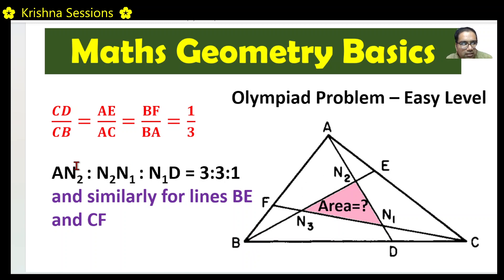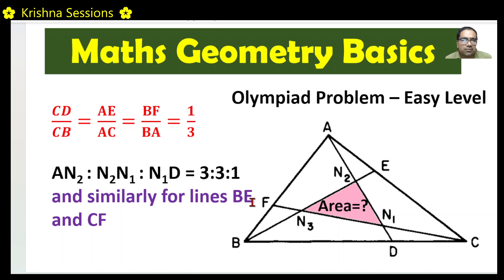Three lines are drawn and these lines meet somewhere inside the triangle. What is also given is that these cevians divide each other in the ratio 3:3:1. For line AD, the ratio is 3:3:1. Similarly for lines BE and CF, the ratio is again 3:3:1. So we are given two sets of ratios: each side is divided 1/3, and each cevian is divided 3:3:1.